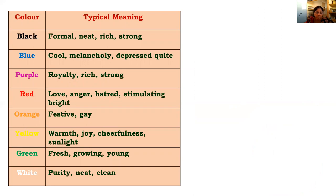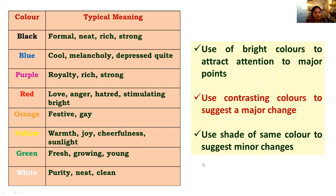Each color conveys a different meaning. Black suggests formality, neatness, richness, and strength. Blue conveys coolness and calm. Purple represents royalty, richness, and strength. Red is associated with love, anger, and stimulation. Orange is festive and gay. Yellow represents warmth, joy, and cheerfulness. Green suggests freshness and growth. White conveys purity, neatness, and cleanliness. Always use bright colors to attract attention to a major point.